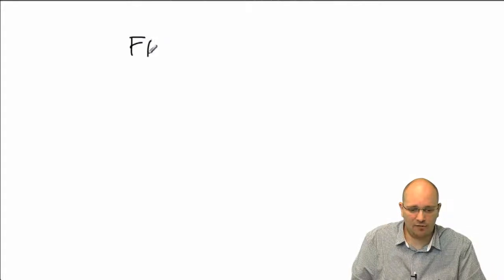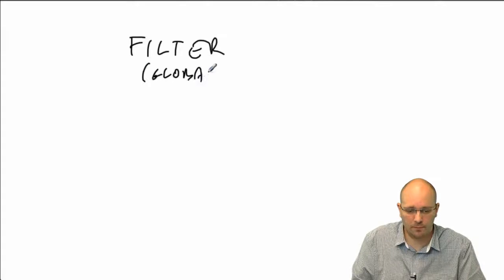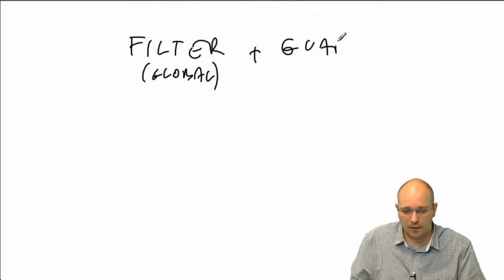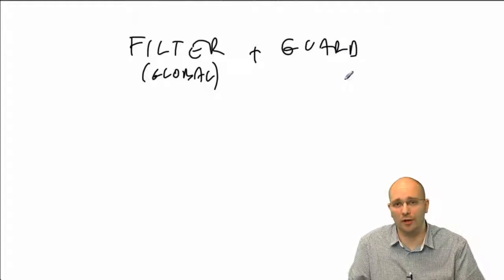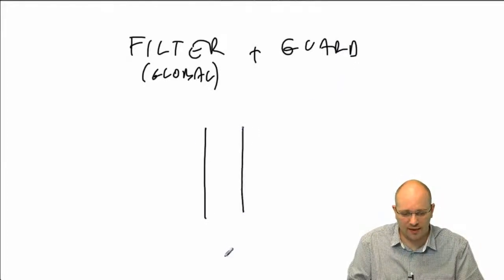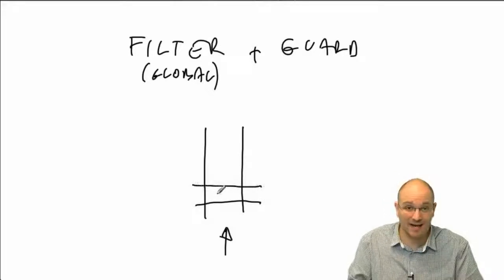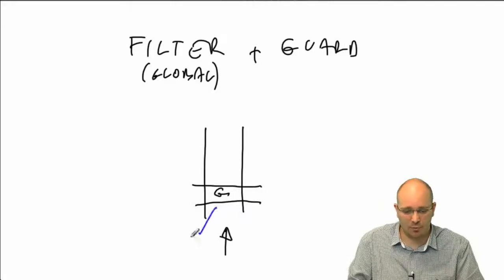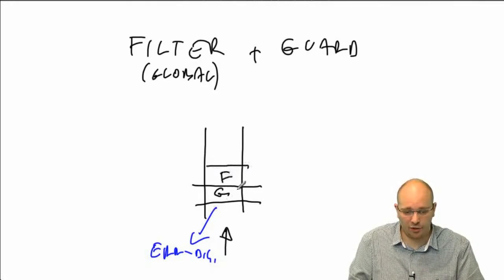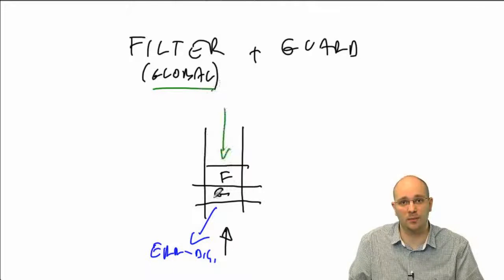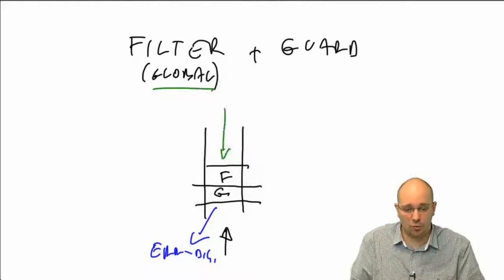Let's say that we have filter configured globally and Guard — for Guard, it doesn't matter whether it's configured globally or locally, it behaves the same way. Here we have the interface and the BPDU arrives. The first feature that will be encountered in this case by the incoming BPDU will be our Guard, which means that when this BPDU arrives, this port is going to become error disabled. Behind this feature, we have the filter sitting. But remember, a globally configured filter is designed to filter only the outgoing BPDUs, so the incoming BPDUs are not going to be touched by the BPDU filter. From that perspective, we can say that this configuration actually makes some sense.